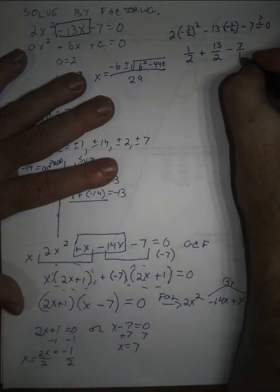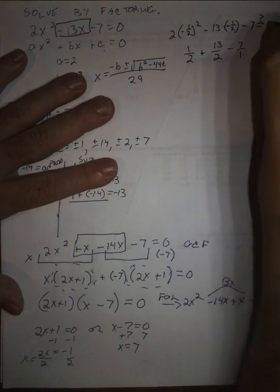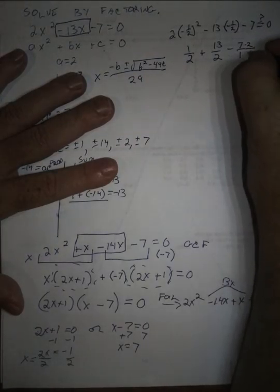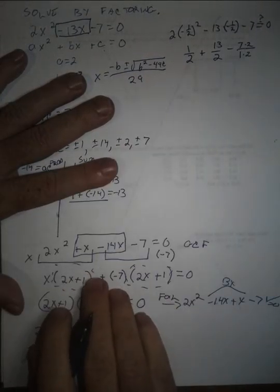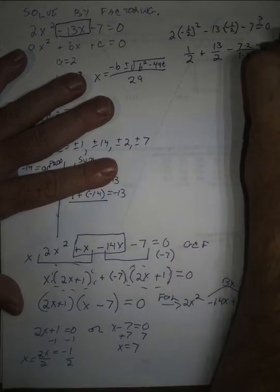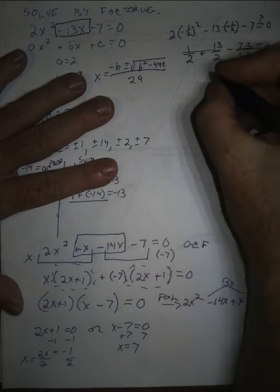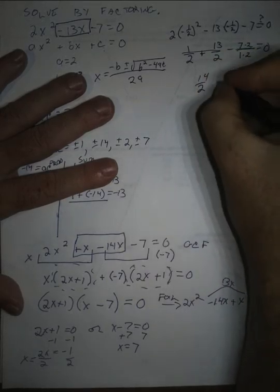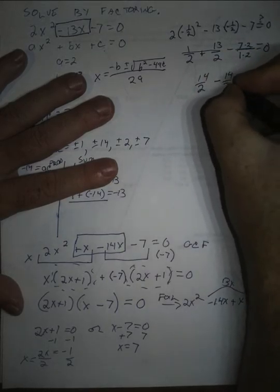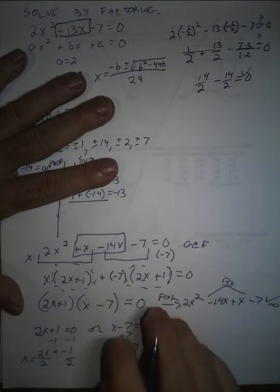and I could rewrite that as 14 halves, and we can see now that 14 halves minus, this is 14 halves minus 14 halves is indeed zero.